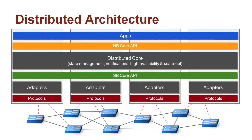ONOS is a distributed system and runs as a cluster. The distributed core manages the state across instances and is the key component enabling scale and high availability. A pluggable southbound allows OpenFlow or other protocols to interact with network elements. Northbound abstractions and APIs ease application programming.